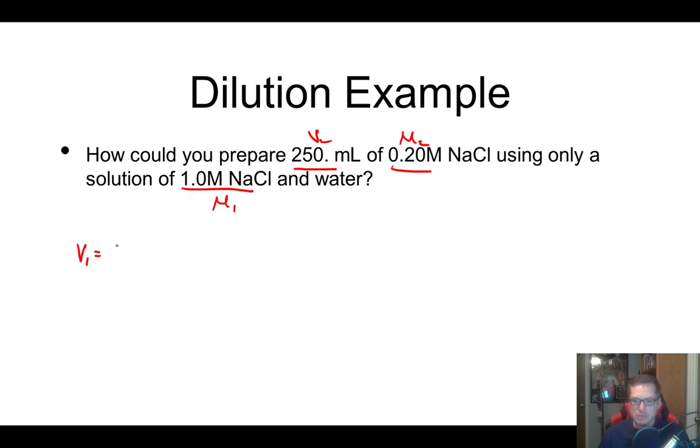So our V1 would be equal to M2V2 over M1. So our M2 is 0.2, we're going to multiply that by our V2, which is 250, and divide that by our M1, which is one. So 0.2 times 250 is 50. I guess I could have done that in my head. So 50 milliliters. And this was milliliters, so our answer has got to be milliliters.